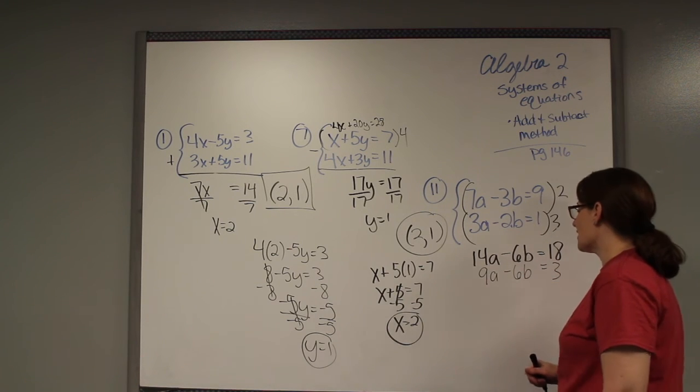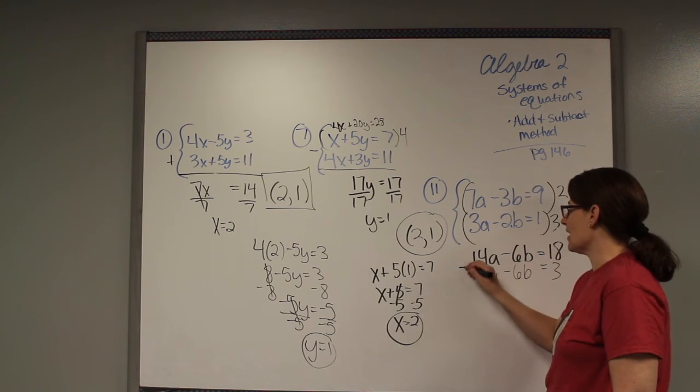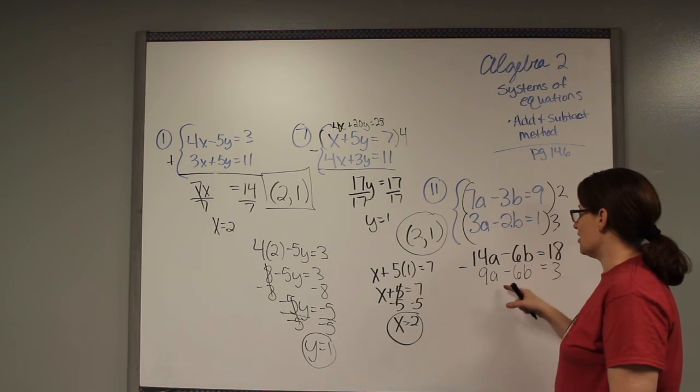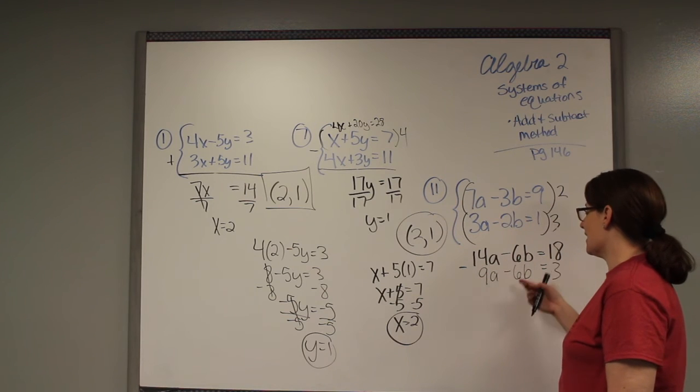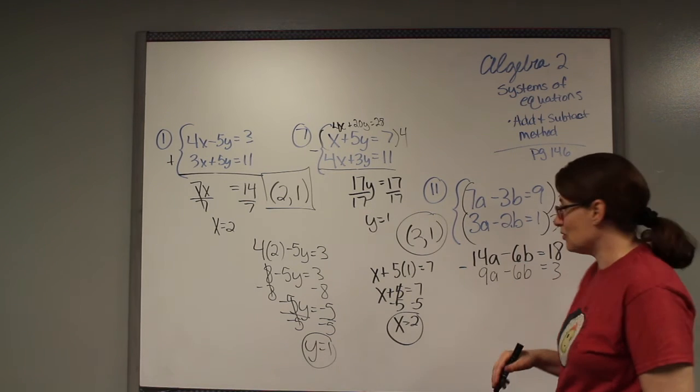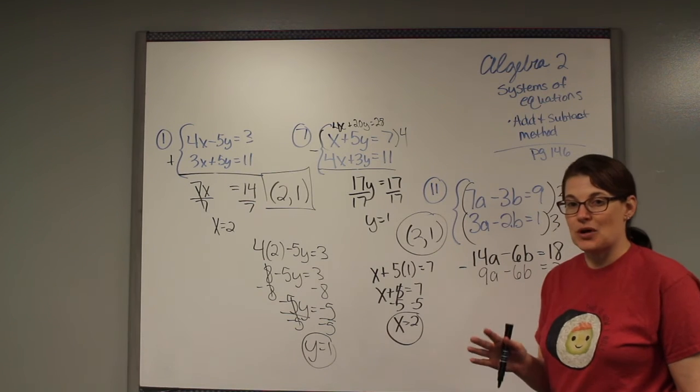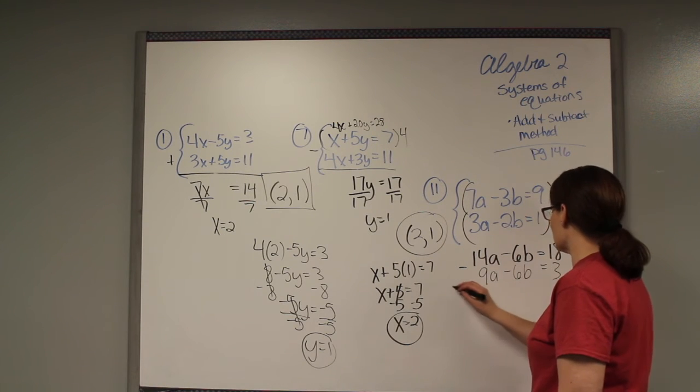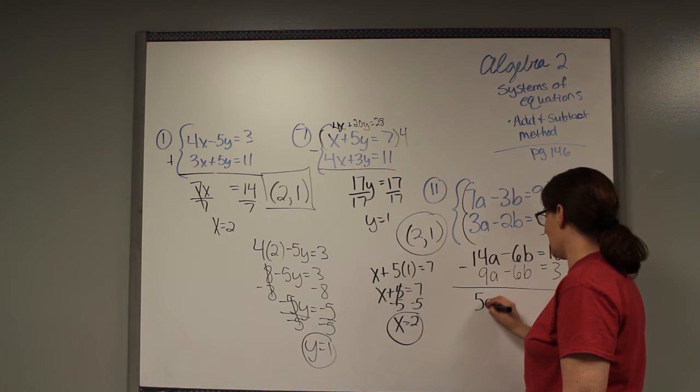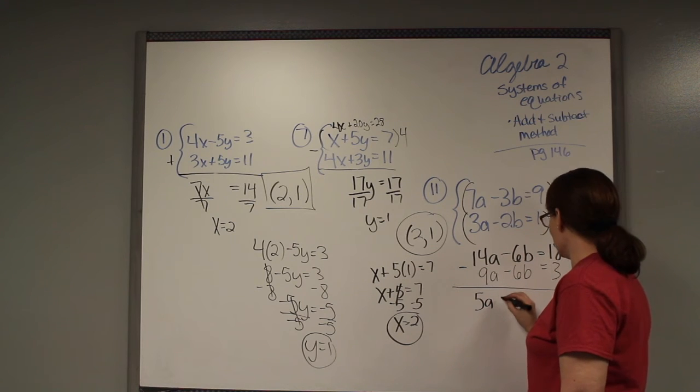These are both negatives, so I don't want to add them because then I'm going to get negative 12. I want to subtract them because a negative minus negative makes a positive. It's like negative 6 minus a negative 6 makes this negative 6 plus 6. So we're going to subtract them. 14 minus 9 should be 5a. These cancel out, and then 18 minus 3 is 15.